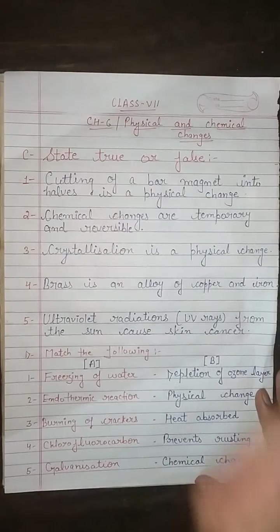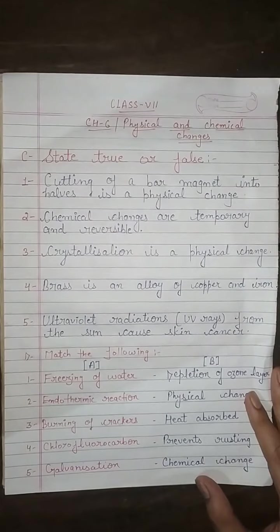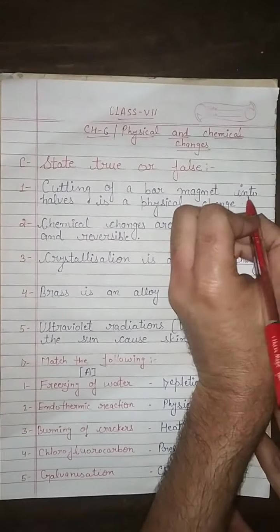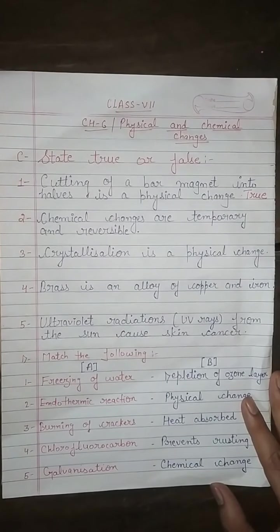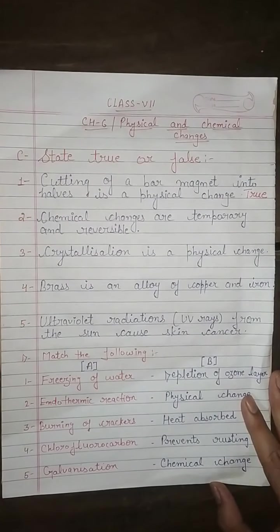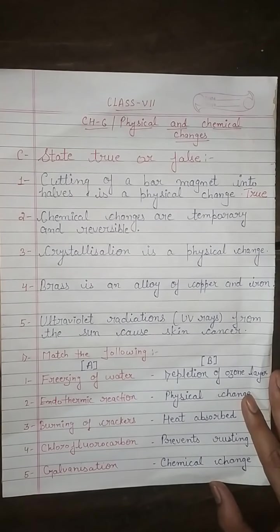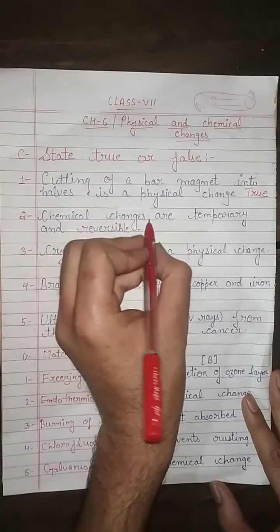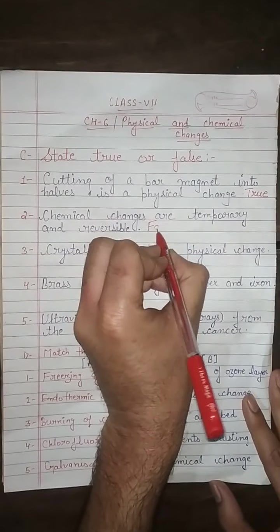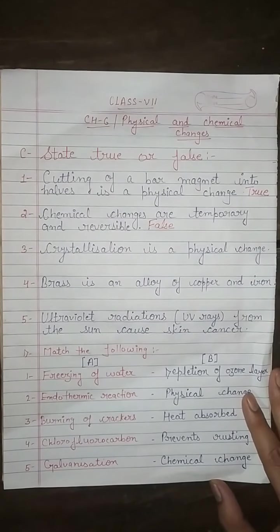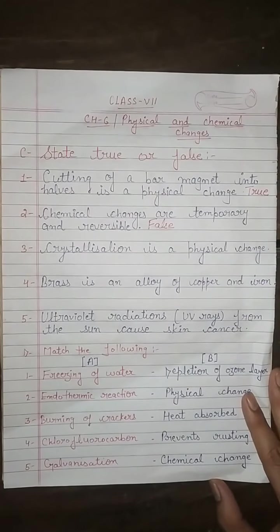Cutting of a bar magnet into halves is a physical change — the answer is true. Second, chemical changes are temporary and reversible — this is false, because chemical changes are permanent and irreversible. Third, crystallization is a physical change — yes, crystallization involves crystal formation, so it is a physical change.